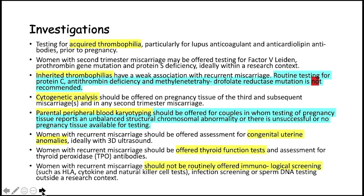For investigations, testing for acquired thrombophilias — specifically lupus anticoagulant and anti-cardiolipin antibodies — is recommended prior to pregnancy. In cases of second-trimester miscarriage, testing for factor V Leiden mutation, prothrombin gene mutation, and protein S deficiency may be offered, ideally within a research context. Inherited thrombophilias are not routinely tested due to weak association. Cytogenetic analysis should be offered on pregnancy tissue from the third and subsequent miscarriages and in any second-trimester miscarriage.